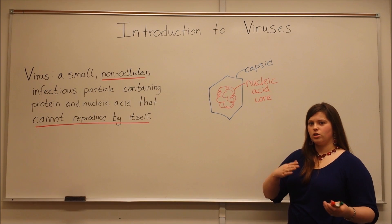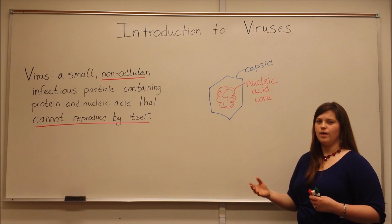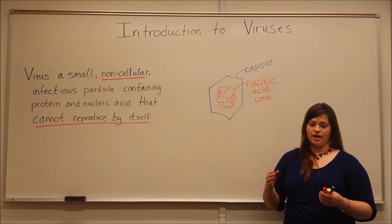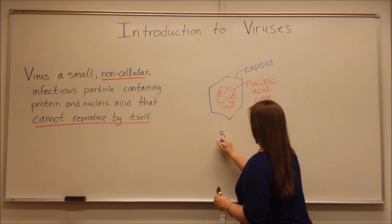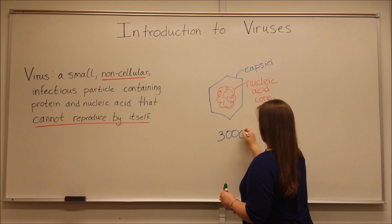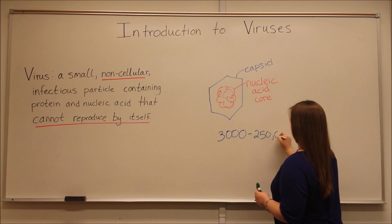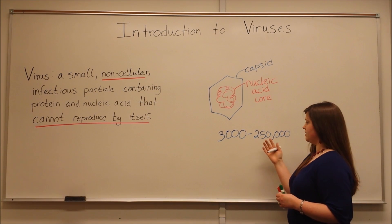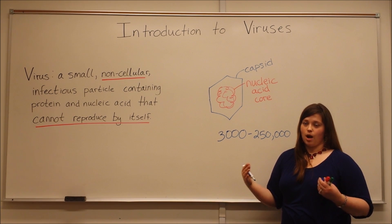Now, to also indicate the range of diversity among viruses, let's talk about how many nucleotides are common in a viral genome. Nucleotides, of course, are the building blocks that make up DNA and RNA. The smallest viral genomes are about 3,000 nucleotides. The largest viral genomes are about 250,000 nucleotides. So you can see that there's quite a range here, where the viruses that have more nucleotides, they have more genetic information, they are generally more complex.